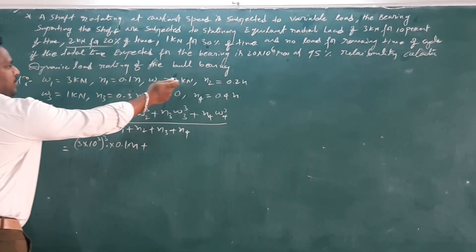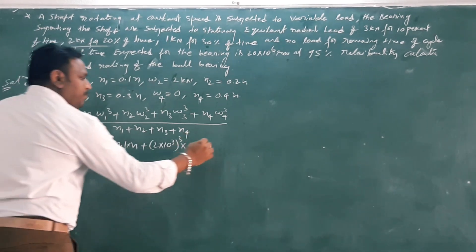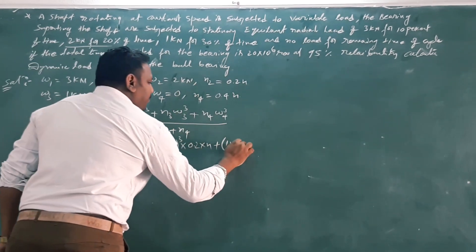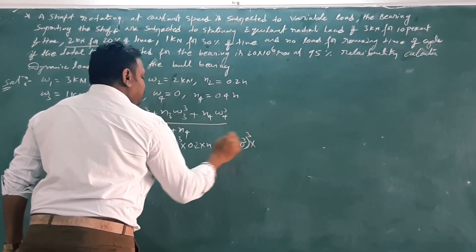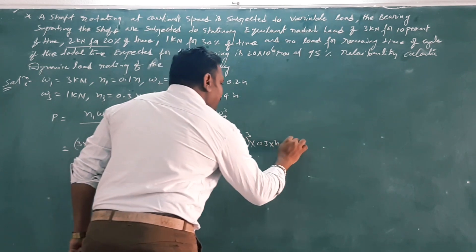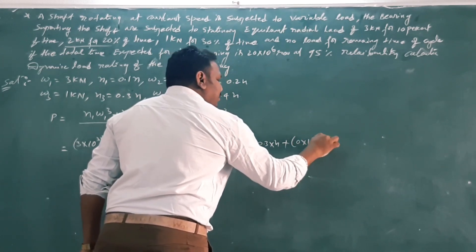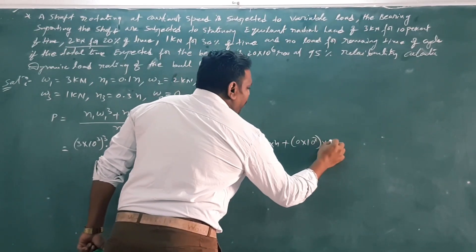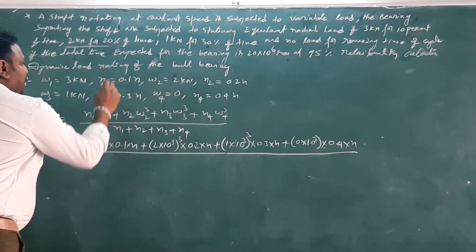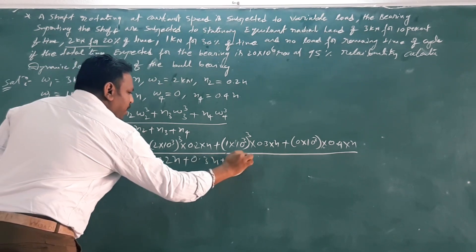Substituting values: W1=3, so 3^3 × 0.1N; plus W2=10.3 cubed × 0.2N; plus W3=1, so 1^3 × 0.3N; plus W4=0, so 0 × 0.4N. The denominator is N1 + 0.1N + 0.3N + 0.4N = N.